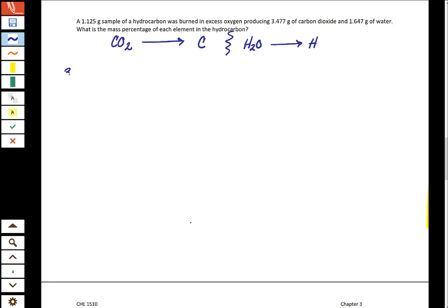We have 3.477 grams of carbon dioxide. And when we have this many grams of carbon dioxide, we can convert this to moles. So the molar mass of carbon dioxide is 44.01 grams, and that's for one mole of CO2. Well, the problem is we don't really want our CO2, we want the carbon that's inside the CO2. So what we'll do is we'll continue this process and we'll say in one mole of CO2 there is one mole of carbon.